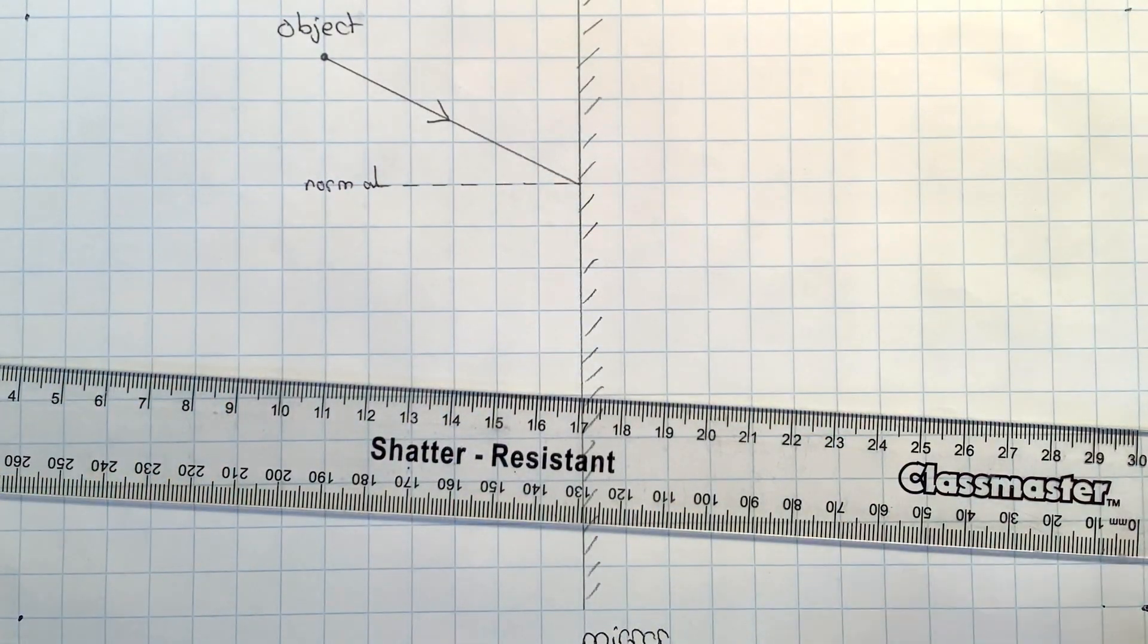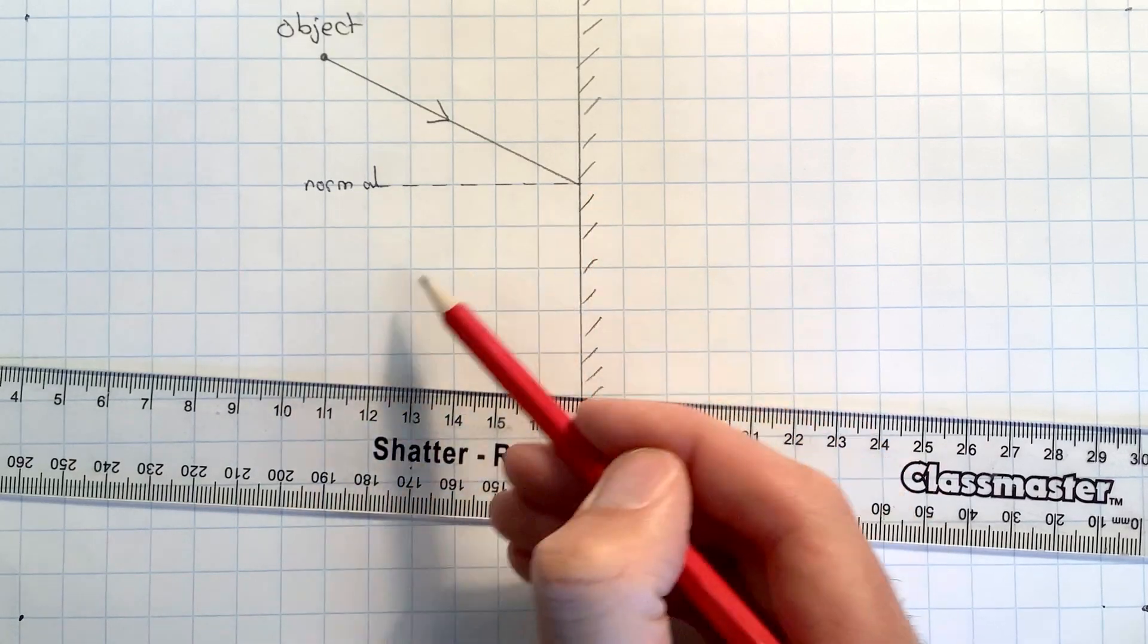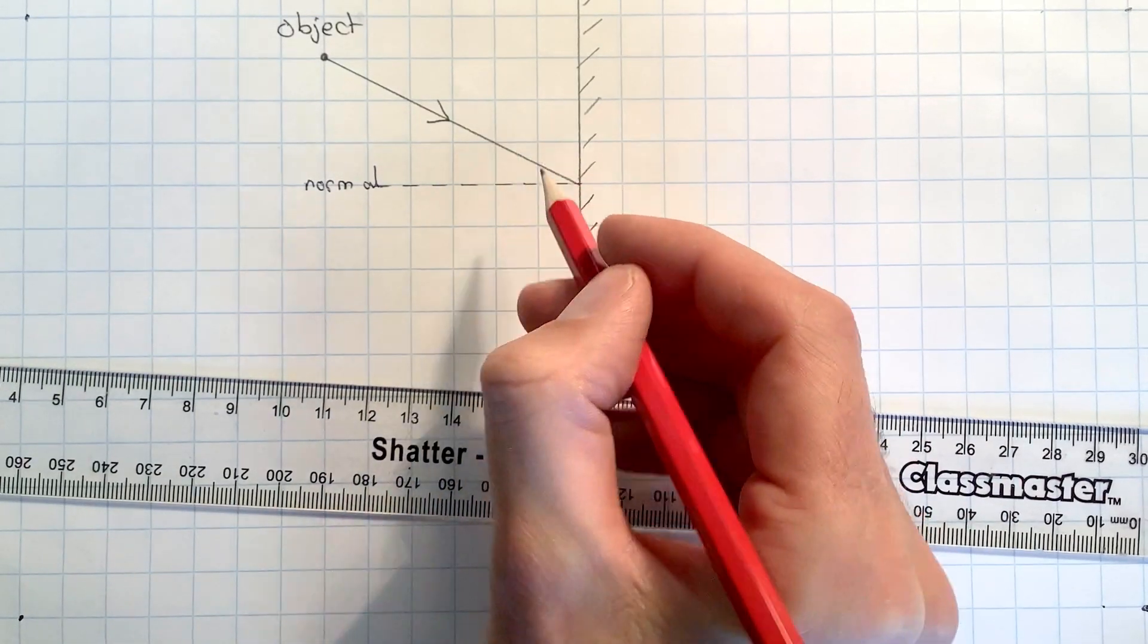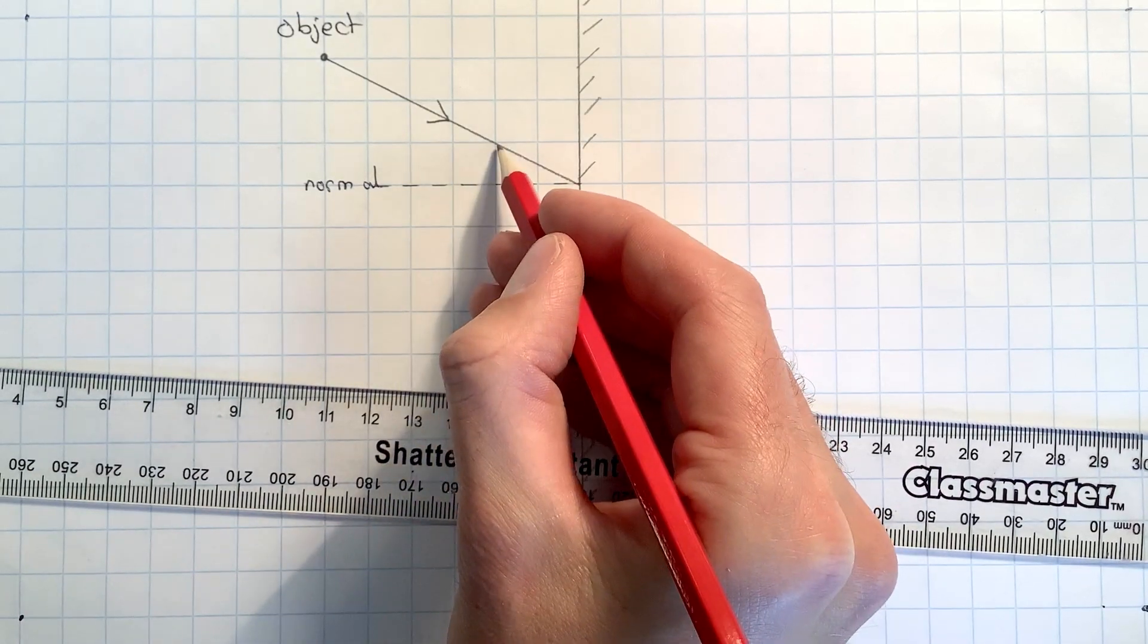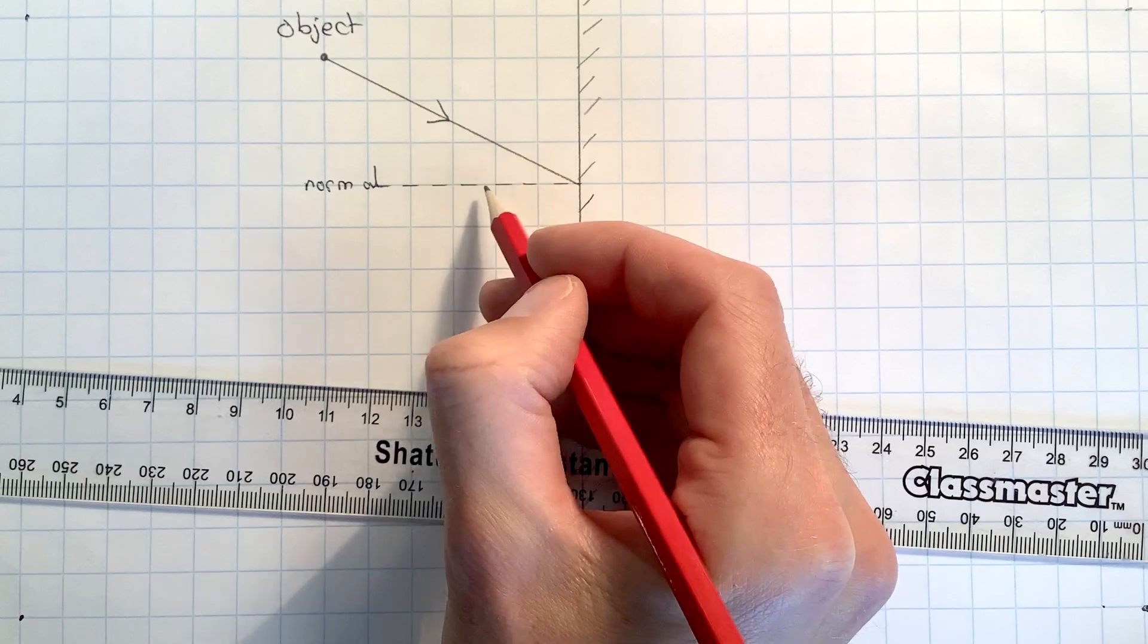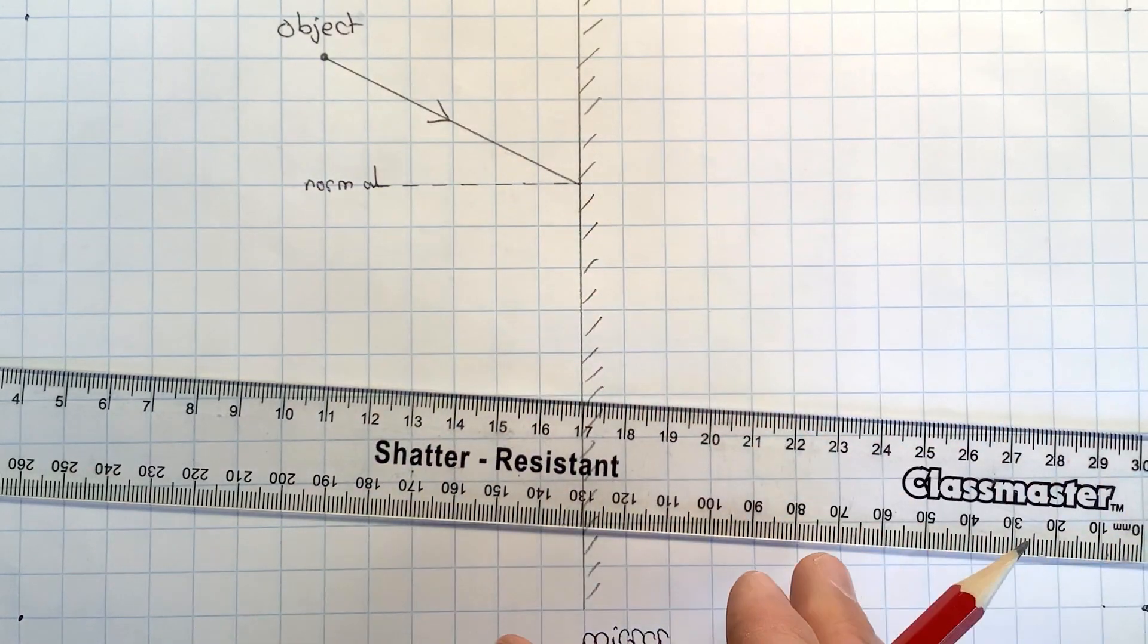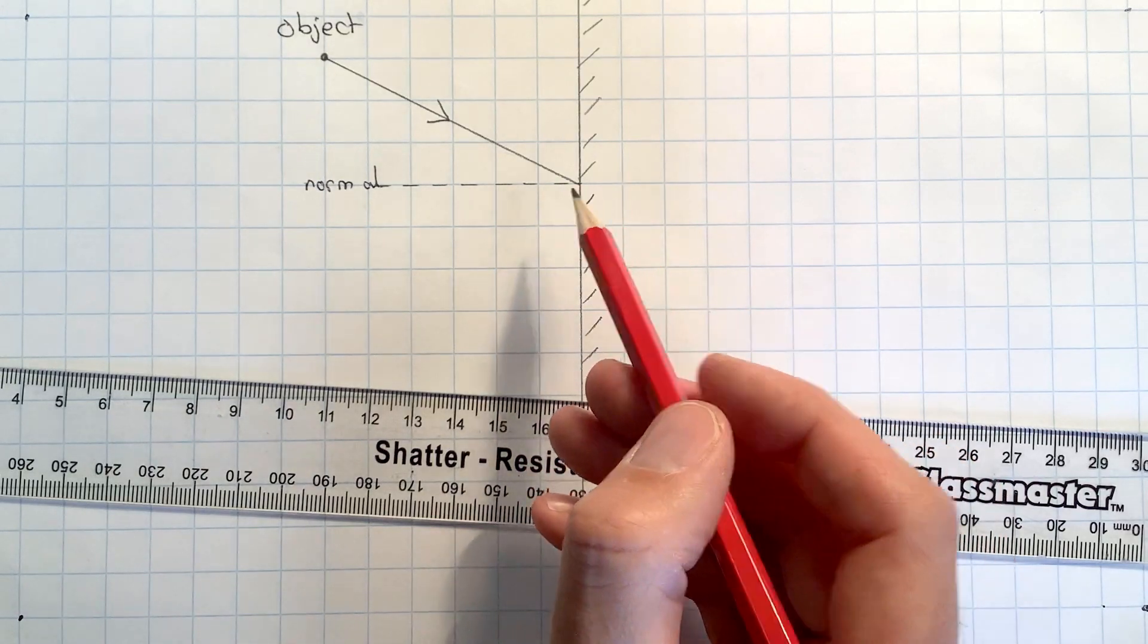The next thing is that I need to draw in a reflected ray which needs to have an angle of reflection. The angle between the normal and that reflected ray has to be the same as this angle of incidence between the incident ray and the normal. In order to get that right, I can make use of the fact that I've got squared paper.